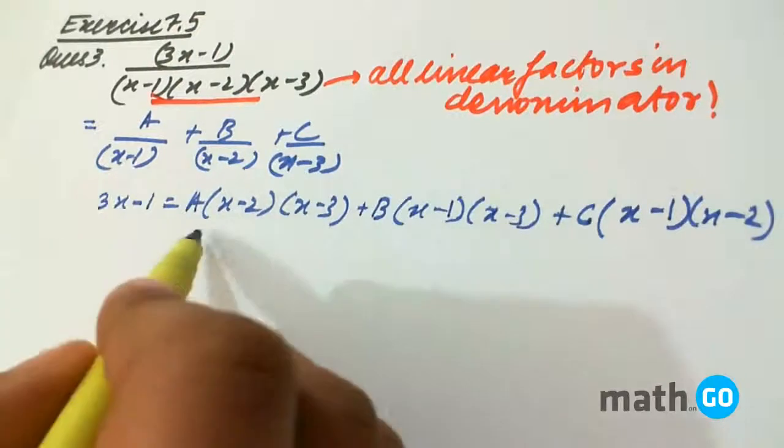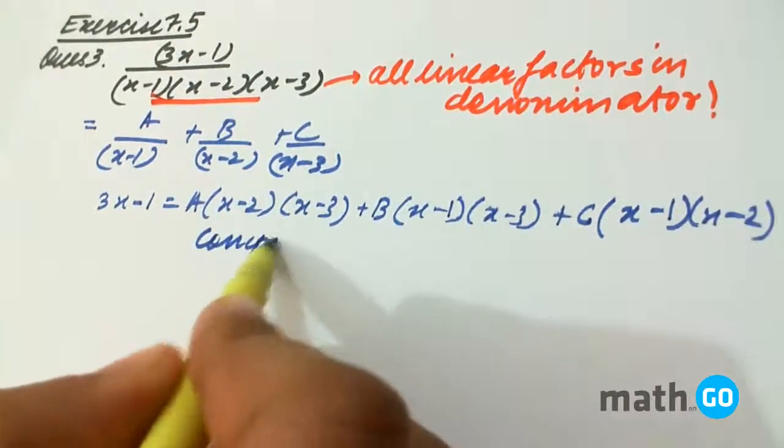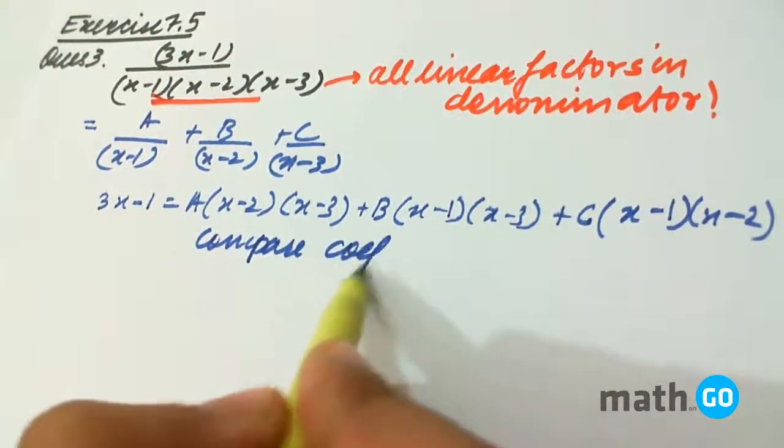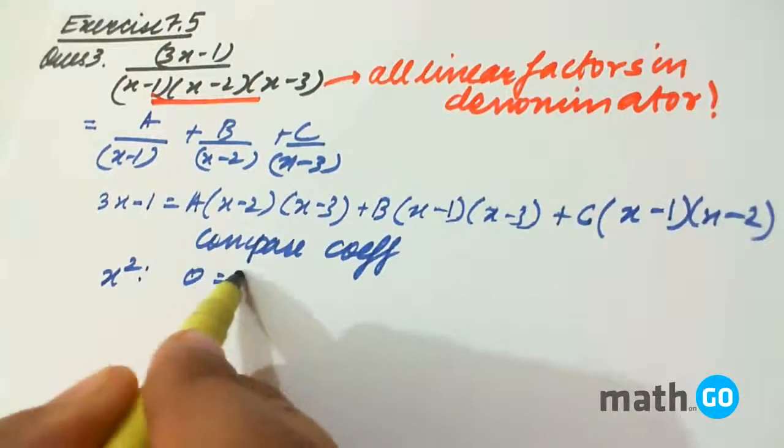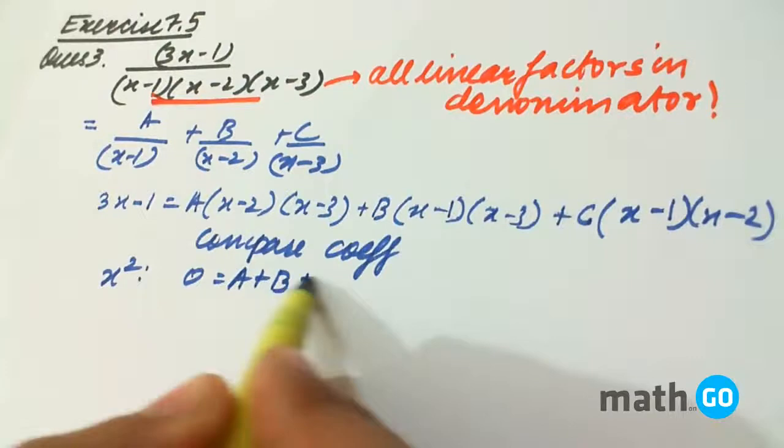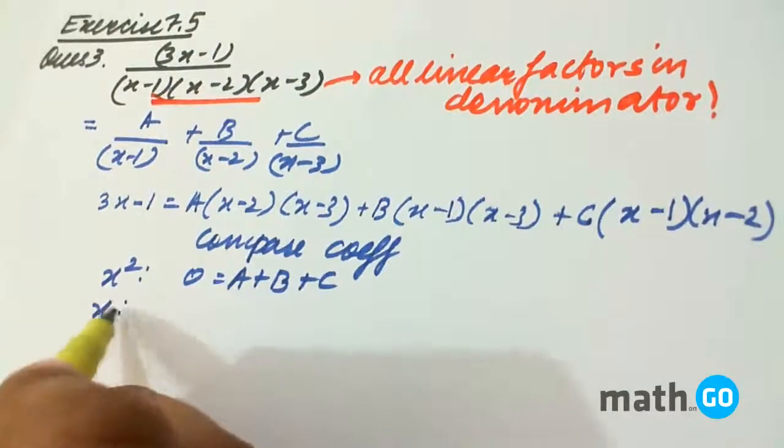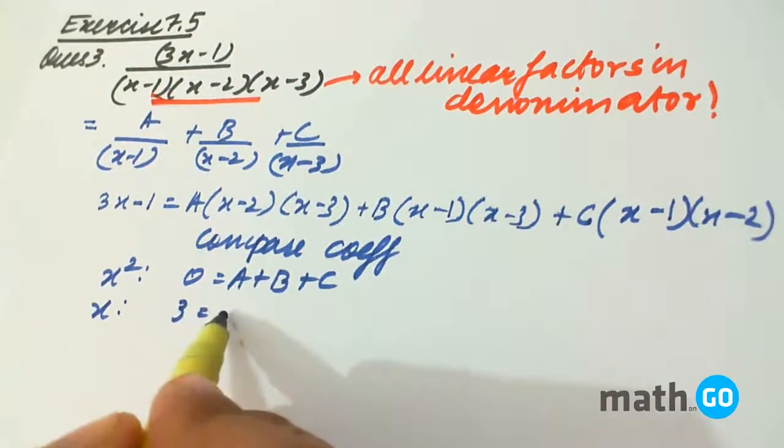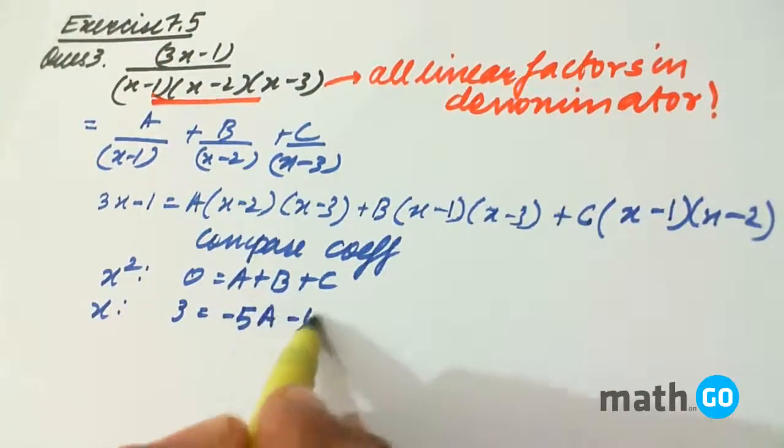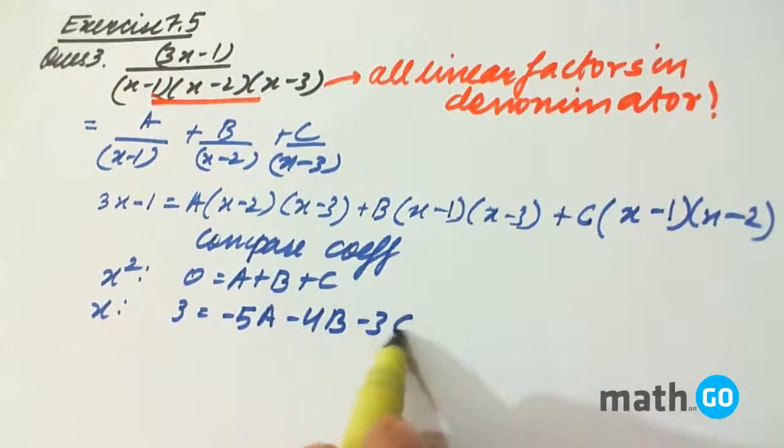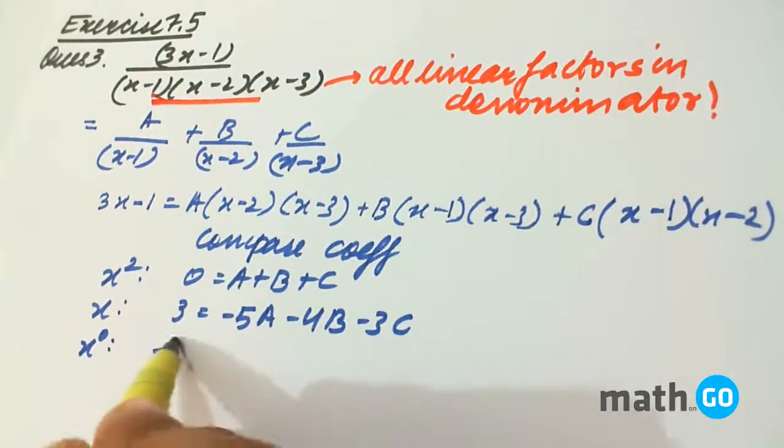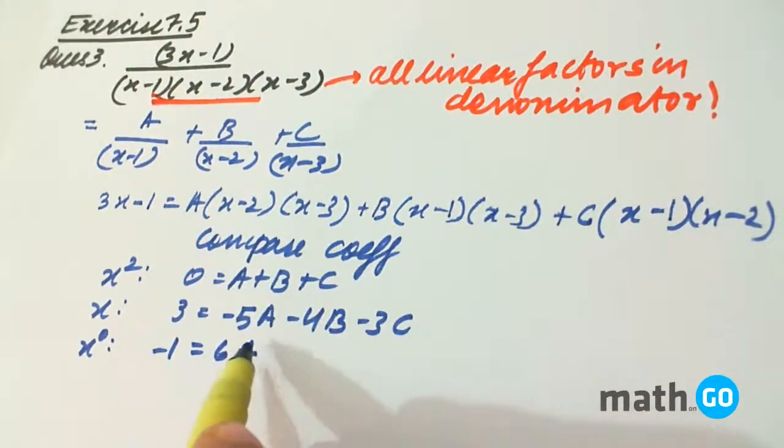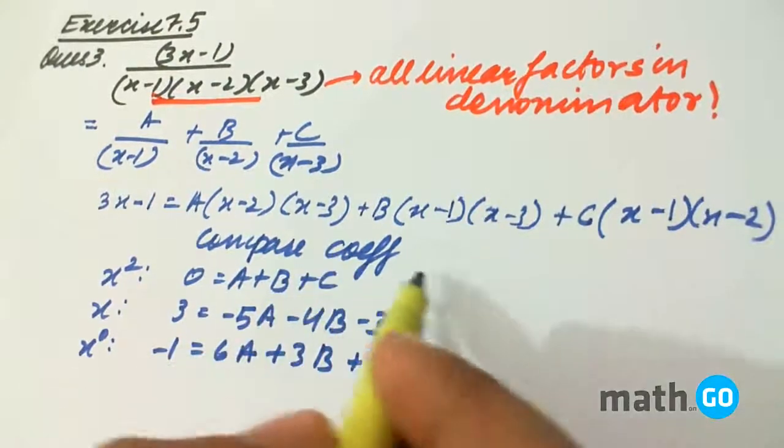On the other side we will compare coefficients. So for x², 0 equals to A plus B plus C. And for x, we have 3 equals to minus 5A minus 4B minus 3C. And for x⁰, we have minus 1 equals to 6A plus 3B plus 2C.